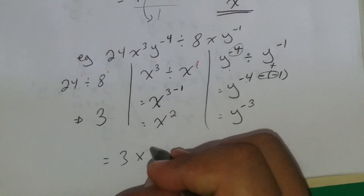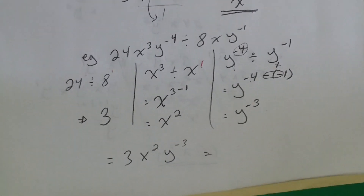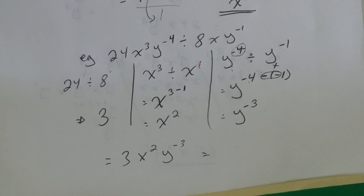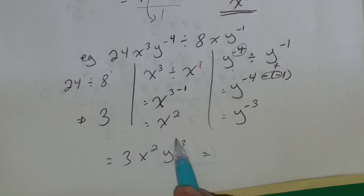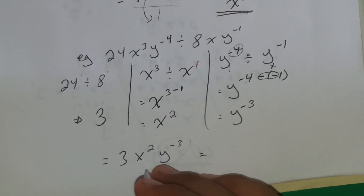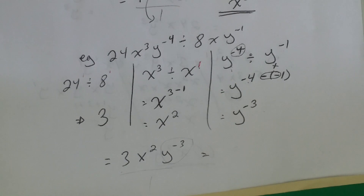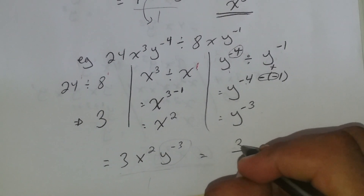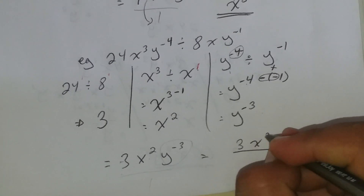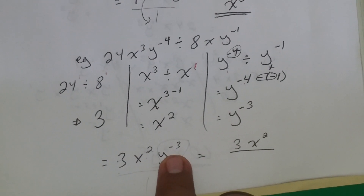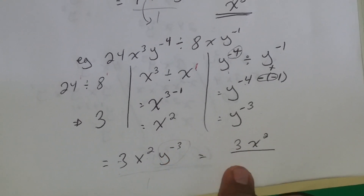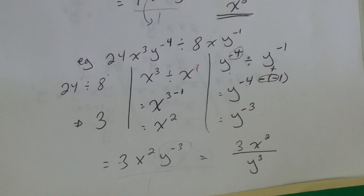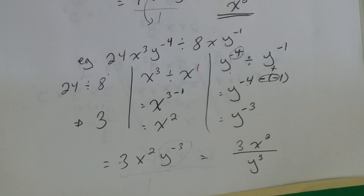Our answer is 3x to the second y to the negative three. We don't want negative powers in our final answer. Since this is over 1, the 3 and x to the second are positive and stay in the numerator. For y to the negative three, we move it to the denominator to make the power positive: y to the third. Final answer: 3x squared over y cubed. Don't add the negative sign at the bottom — that would be wrong.